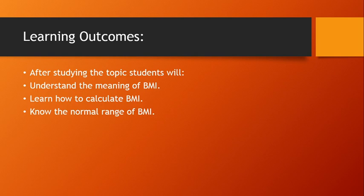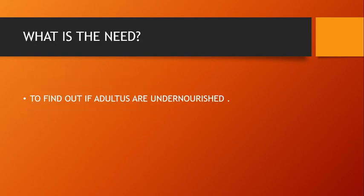Let's start the lesson. BMI is a criteria which is about nourishment level in adults. This is a criteria through which we can know whether the proportion of nourishment in our society is correct or not. It is a ratio of weight and height.